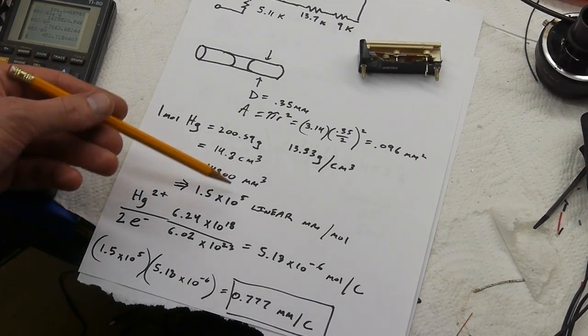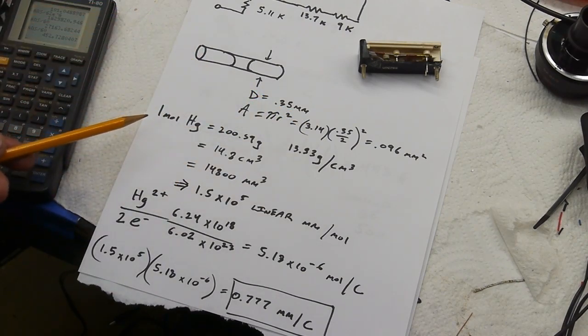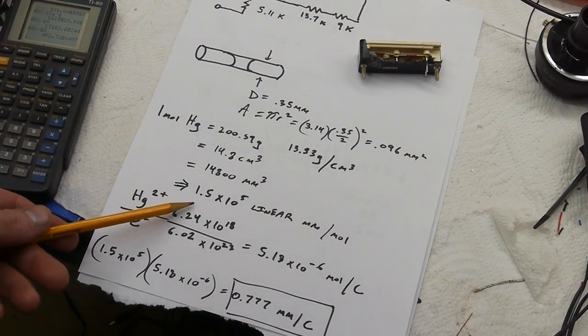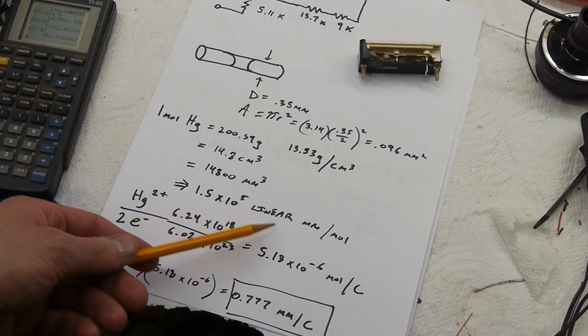And then if we divide by the area of that capillary, we can figure out that one mole of mercury atoms is about 1.5 times 10 to the 5 linear millimeters on that scale per mole.